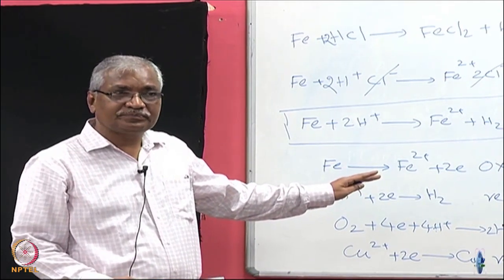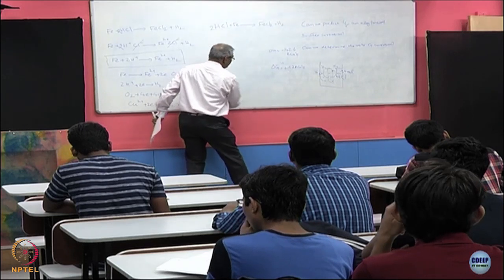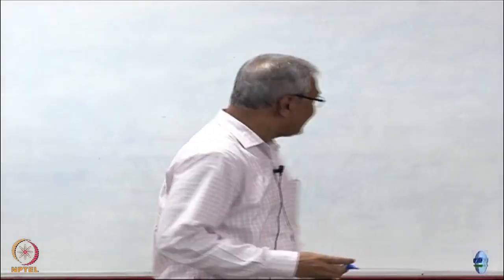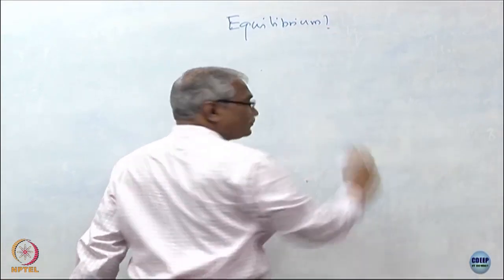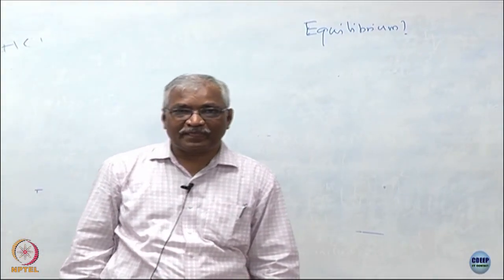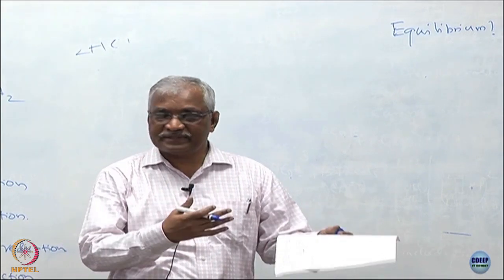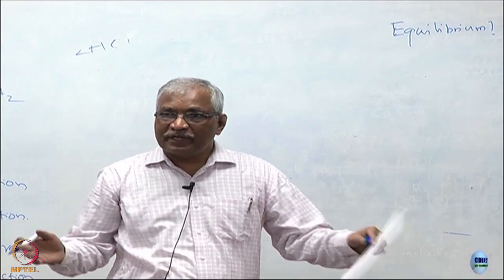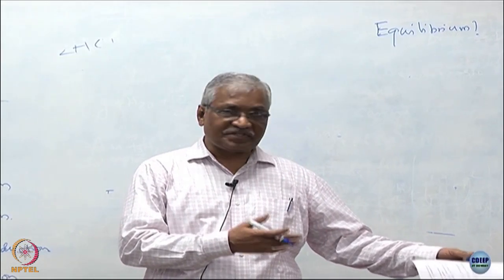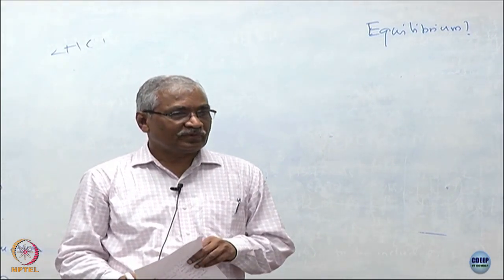Let us go to the next step of our understanding towards how do we predict if corrosion occurs. You are aware of what is called thermodynamic equilibrium, where the rate of the forward reaction is equal to the rate of backward reaction. Now, if you deviate from the equilibrium, either the forward reaction is faster than the backward reaction or vice versa.